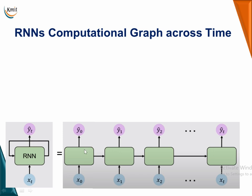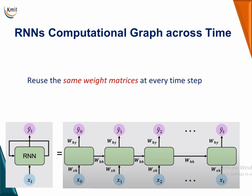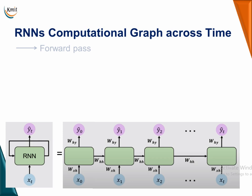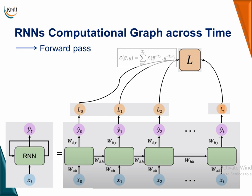This is the computational graph across time steps: at time step zero the output is calculated and given to the first time step, whose output is given to the second time step, and so on up to the t-th time step, with individual outputs calculated at each step. The same weight matrices are reused at every time step — this parameter sharing reduces the number of parameters. This is the complete block diagram of RNN: a forward pass is performed and then aggregated to get the final answer.